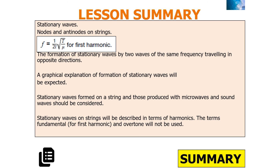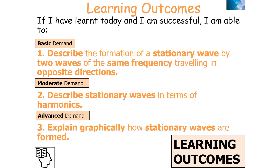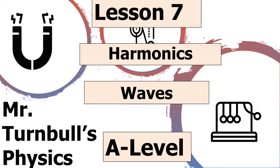We've described stationary waves in terms of harmonics, looking at the first harmonic and all harmonics above that. We can describe the formation of a stationary wave by two waves of the same frequency travelling in opposite directions, describe stationary waves in terms of harmonics, and explain graphically how stationary waves are formed. Thank you very much for watching this lesson on harmonics, part of the waves topic for AQA A-level physics.